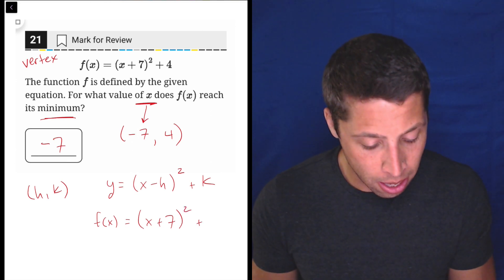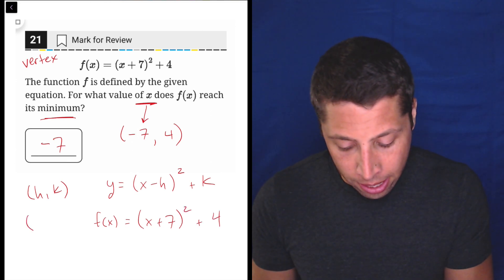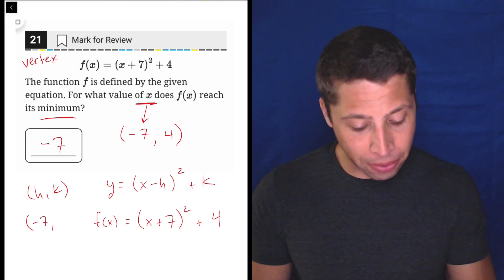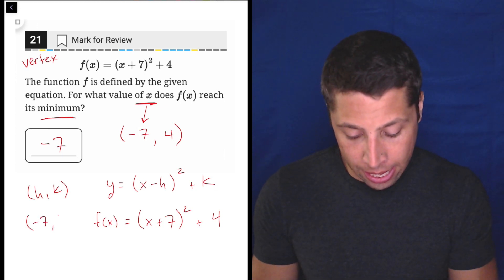So here, (x + 7)² + 4, right, the h is going to have a flipped sign. So negative seven, but the k, the y coordinate, is going to be four.